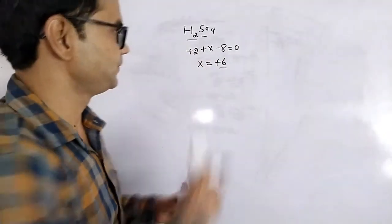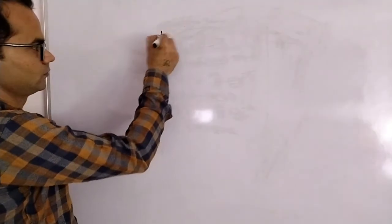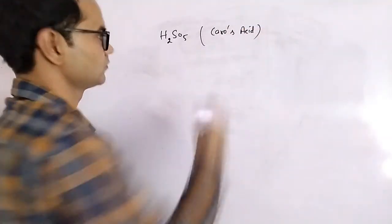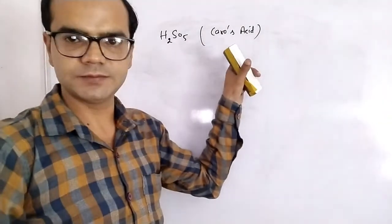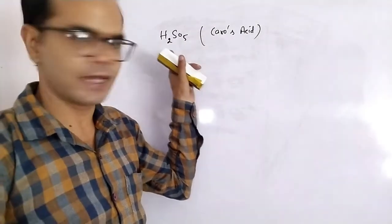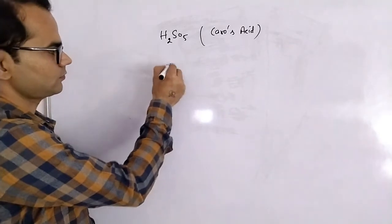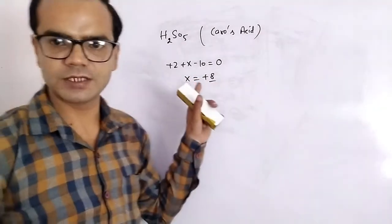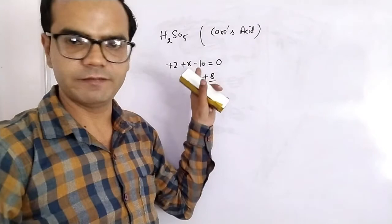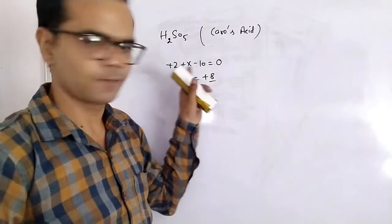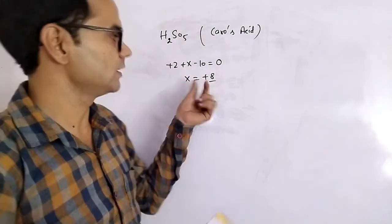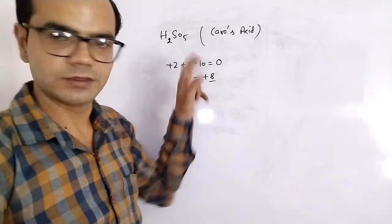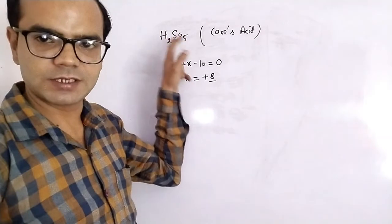The first such compound is H₂SO₅, whose common name is Caro's acid. If we find out the oxidation number using the x-method, the charge on sulfur comes out to be plus eight. But as we know, sulfur has only six valence electrons, so its maximum oxidation number can be plus six only. Since we get plus eight, we now have to understand the structure of H₂SO₅.